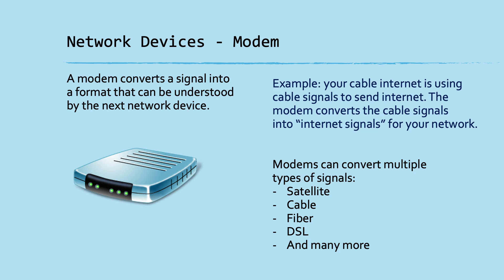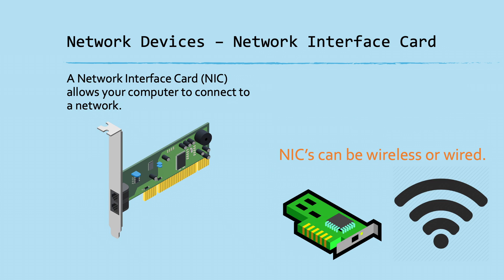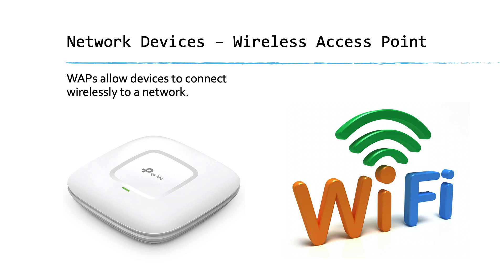A modem translates different signals into a readable signal for your network. When internet signals are sent over cable, satellite, fiber, or DSL, they're sending ones and zeros over cables and the modem translates that into something your network can understand. Inside your phone, laptop, tablet, and printer is something called a network interface card, or NIC, which allows that device to connect to a network — it might have an Ethernet port or be a wireless NIC.